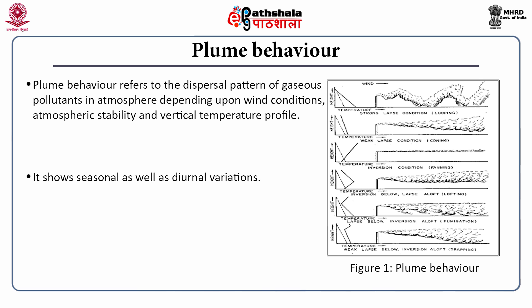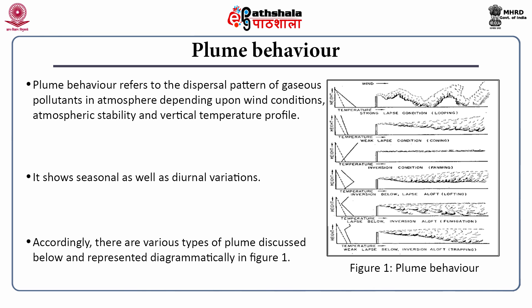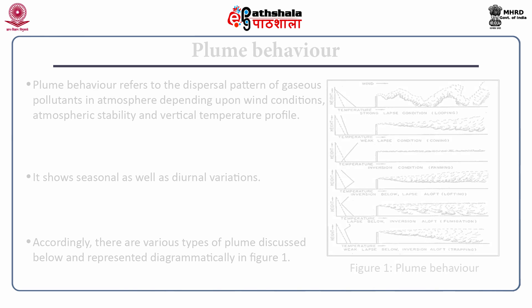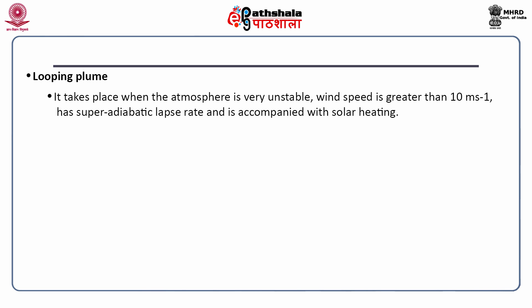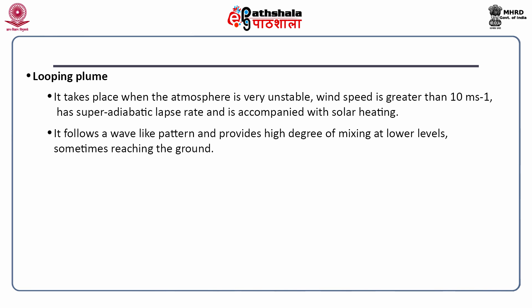Plume behavior shows seasonal as well as diurnal variations. Accordingly, there are various types of plumes represented diagrammatically in figure number one. The first one is the looping plume. It takes place when the atmosphere is very unstable, wind speed is greater than 10 meters per second, has a super-adiabatic lapse rate, and is accompanied with solar heating. It follows a wave-like pattern and provides a high degree of mixing at lower levels, sometimes reaching the ground.